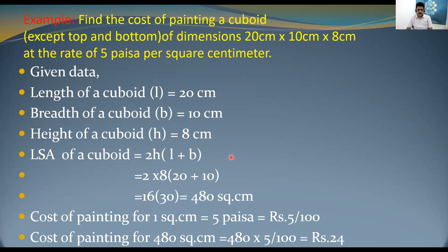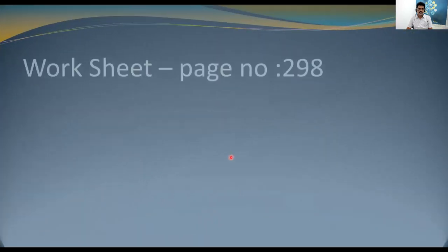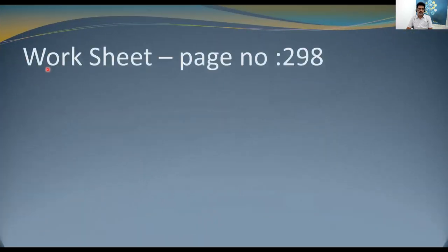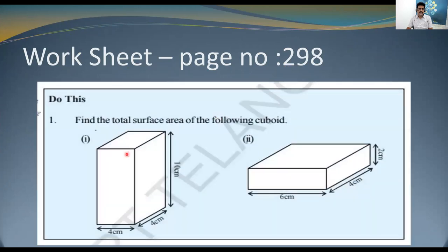Now here is your worksheet homework from your textbook, page number 298. There are diagrams given — find the total surface area of the following cuboids, for example a cuboid with length 4 cm, breadth 4 cm, and height 10 cm. I hope you have understood well. Let us meet in another session. Thank you.